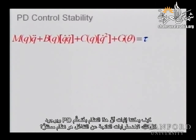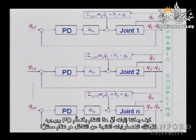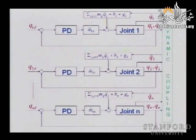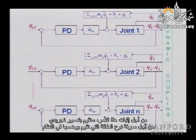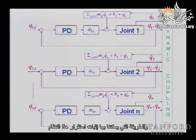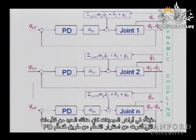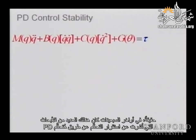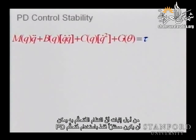The stability of a highly nonlinear and interactive system is not evident. How can we prove that a PD controller, with all these disturbance forces from interaction, is stable? Energy. In the late 1970s, many papers were written about PD control stability proving that yes, the system can be stable just with a PD controller.